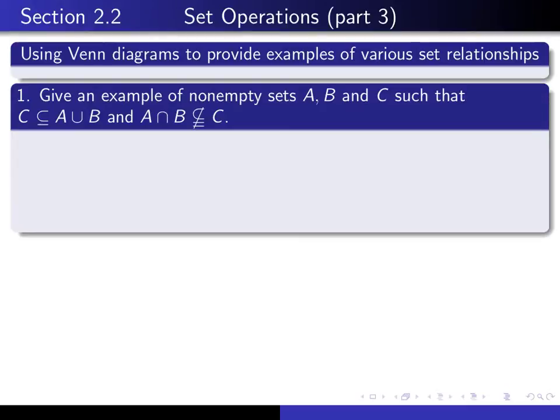So in this lecture we're going to consider two exercises, and here's the first one. Give an example of non-empty sets A, B, and C with the property that C is a subset of the union of A with B, but the intersection of A with B is not a subset of C.